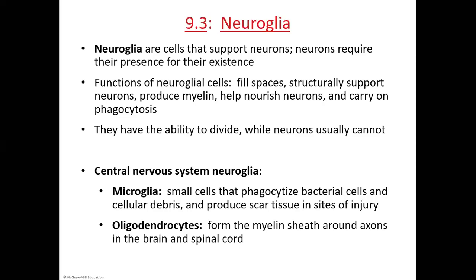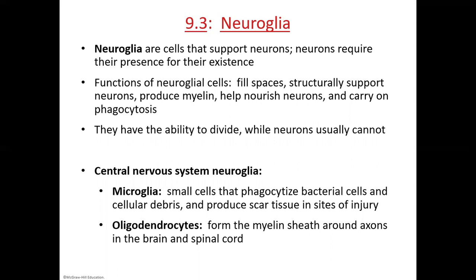Oligodendrocytes — 'dendro' for dendrite-like, 'cyte' for cell — form a myelin sheath around axons in the brain and spinal cord. These cells physically wrap themselves around the axon to create the myelin sheath, which insulates the neuron, makes impulses faster and more efficient. Think of it like the coating on a phone charger wire — if you have gaps in the coating, the signal weakens and you might get shocked. Same principle applies here.